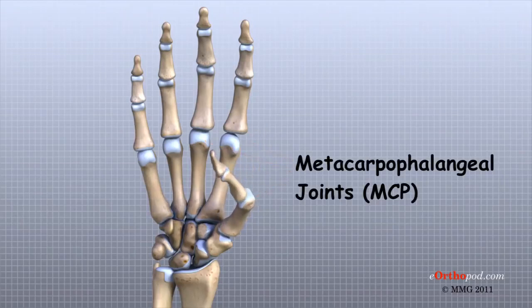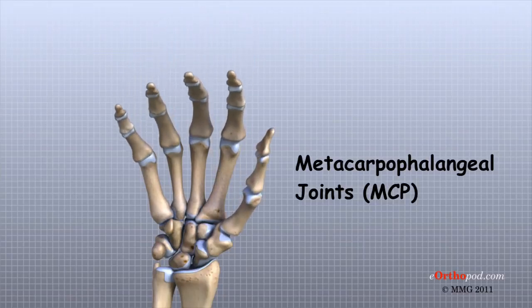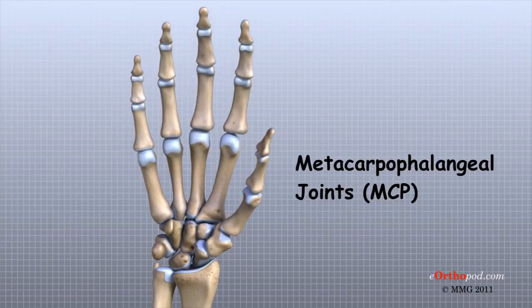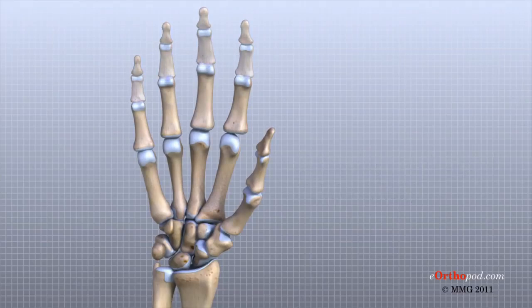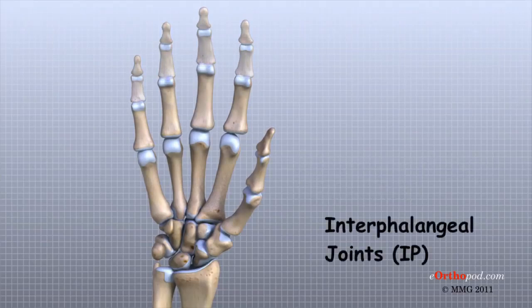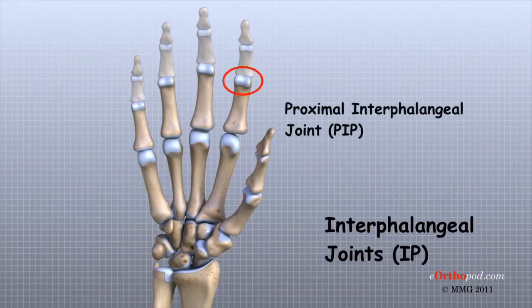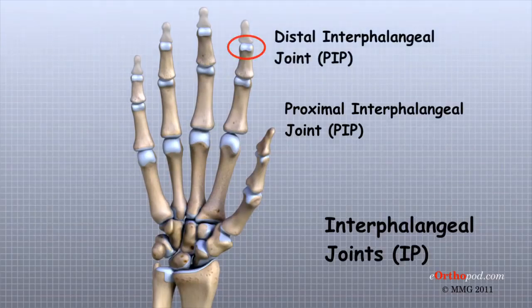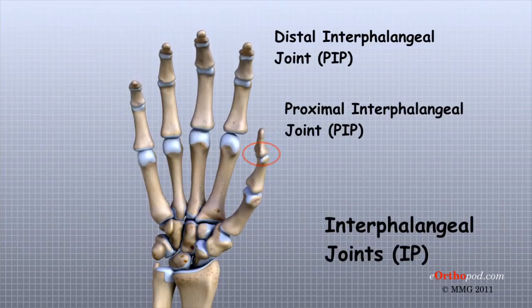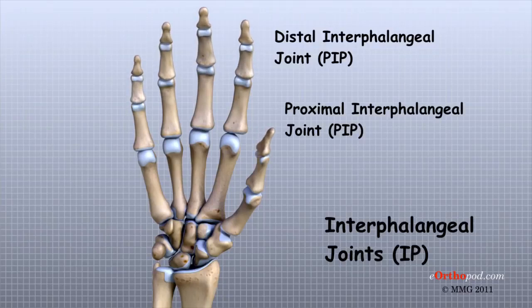These joints are called the metacarpophalangeal joints, or MCP joints. The MCP joints work like a hinge when you bend and straighten your fingers and thumb. The three phalanges in each finger are separated by two joints called interphalangeal joints, or IP joints. The one closest to the MCP joint is called the proximal IP joint, or PIP joint. The joint near the end of the finger is called the distal IP joint, or DIP joint. The thumb only has one IP joint between the two thumb phalanges. The IP joints also work like hinges when you bend and straighten your fingers and thumb.